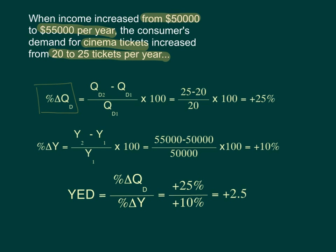There has been a +25% change, meaning demand increased by 25%. The percentage change in income is calculated by taking the new income minus the old income, divided by the old income, times 100. So, 55,000 minus 50,000, divided by 50,000 times 100, gives us +10%. Taking +25 divided by +10 gives an income elasticity of demand of positive 2.5.